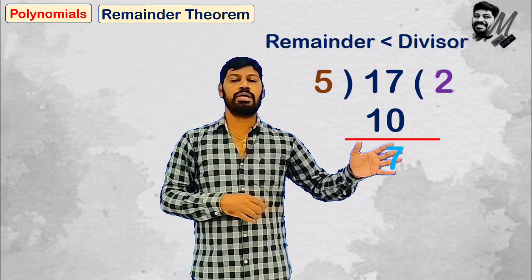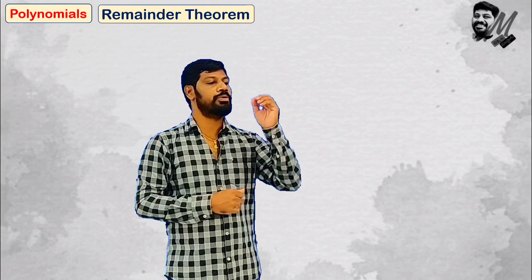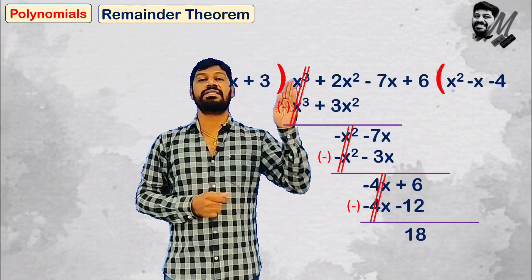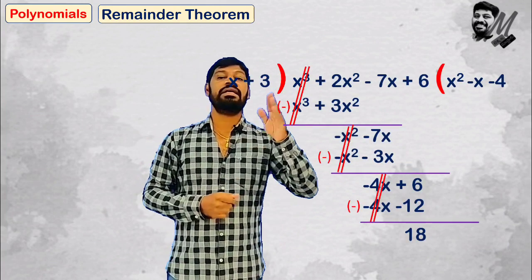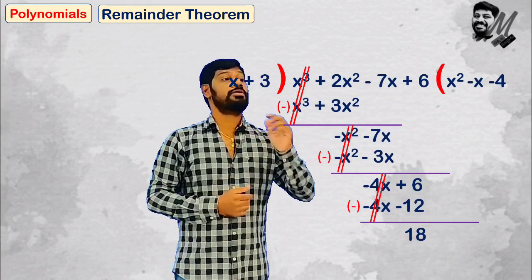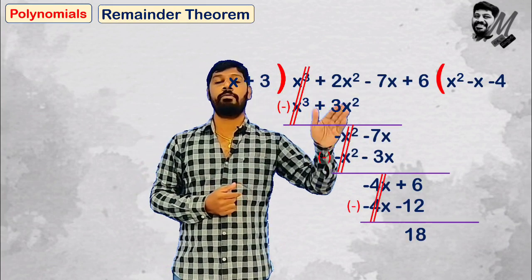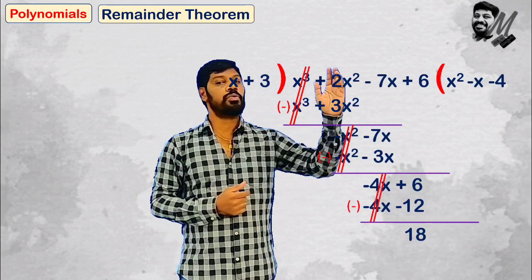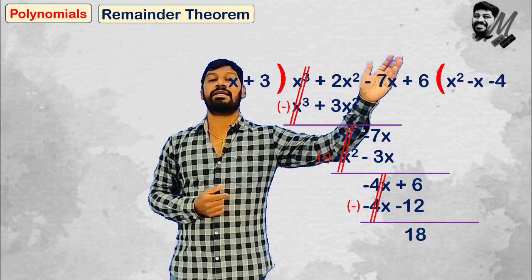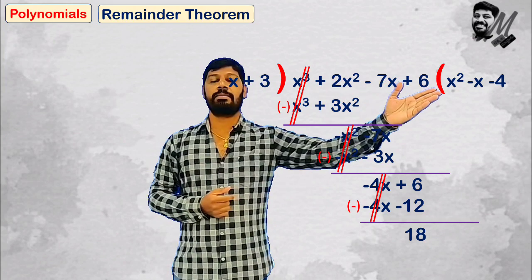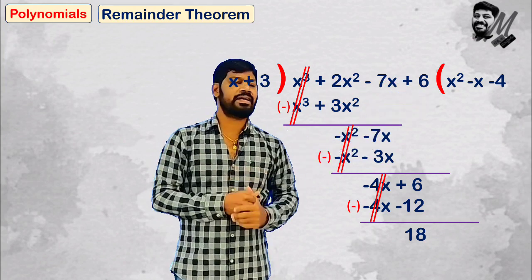Let me show you an example. x plus 3 is a linear polynomial. x cubed plus 2x squared minus 7x plus 6 is a bigger polynomial.